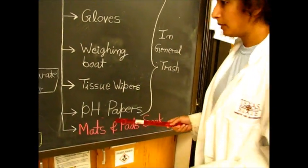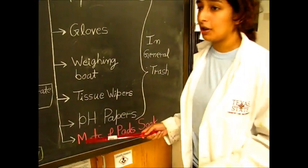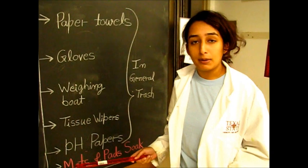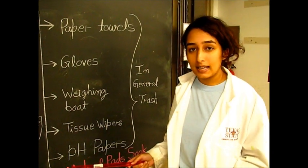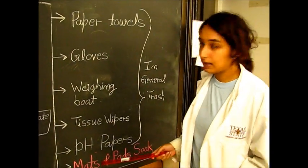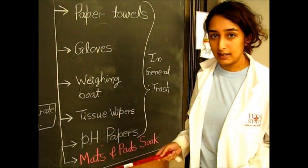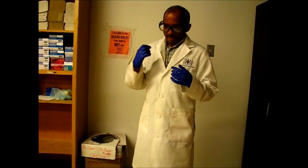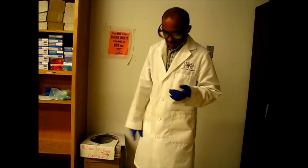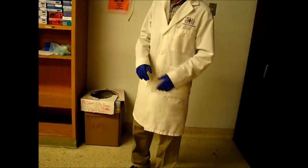For mats and pads, we use those to soak up any spills and we give them to the TA instructing the lab — they will take care of any situation. Welcome to the organic chemistry lab. Always use your personal protective equipment: lab coat, goggles, gloves, and closed-toe shoes.